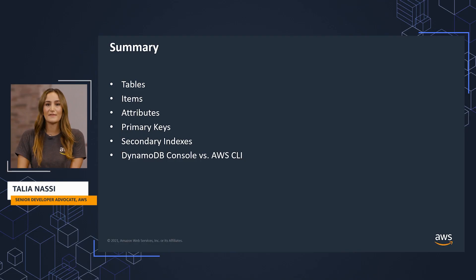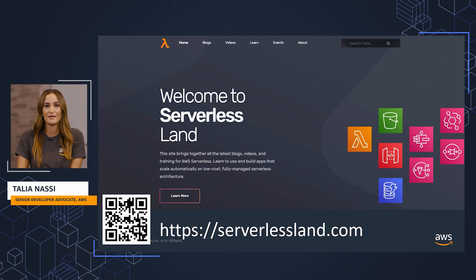In this video, you learned the five basic concepts of DynamoDB: tables, items, attributes, primary keys, and secondary indexes. You learned how to create them in both the AWS DynamoDB console as well as the AWS CLI. To learn more about serverless and DynamoDB, head to serverlessland.com, where you'll find more content from me and my team. I'm Talia Nassi, thanks for tuning in.